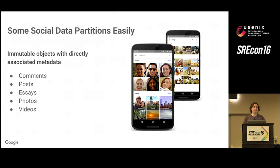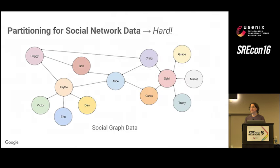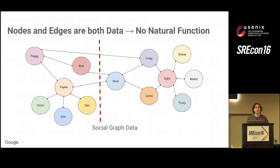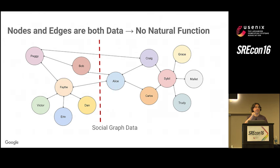One thing that doesn't break apart into nice pieces is the social graph itself. A social graph is a directed or undirected graph whose point is to create a set of interconnections. You might think you can just draw a line through the edges, but you can't — not only do the nodes hold data, the edges themselves hold data as well. For example, you might have a node that represents a social group, and the edges connected to that node represent access or membership within that group. So there's really no clear partitioning function.